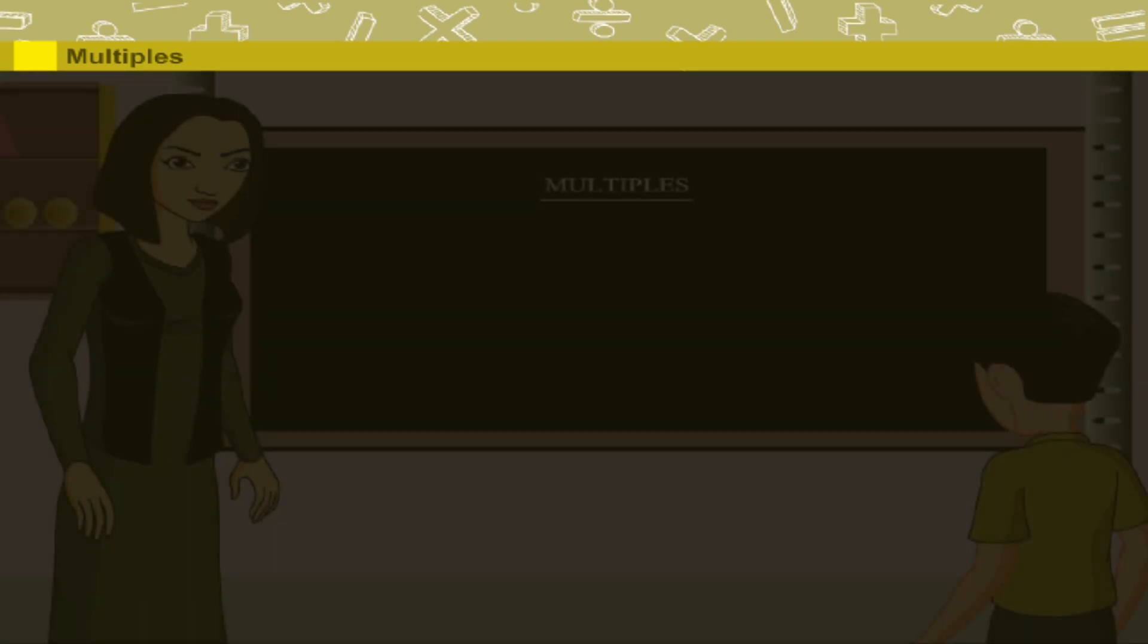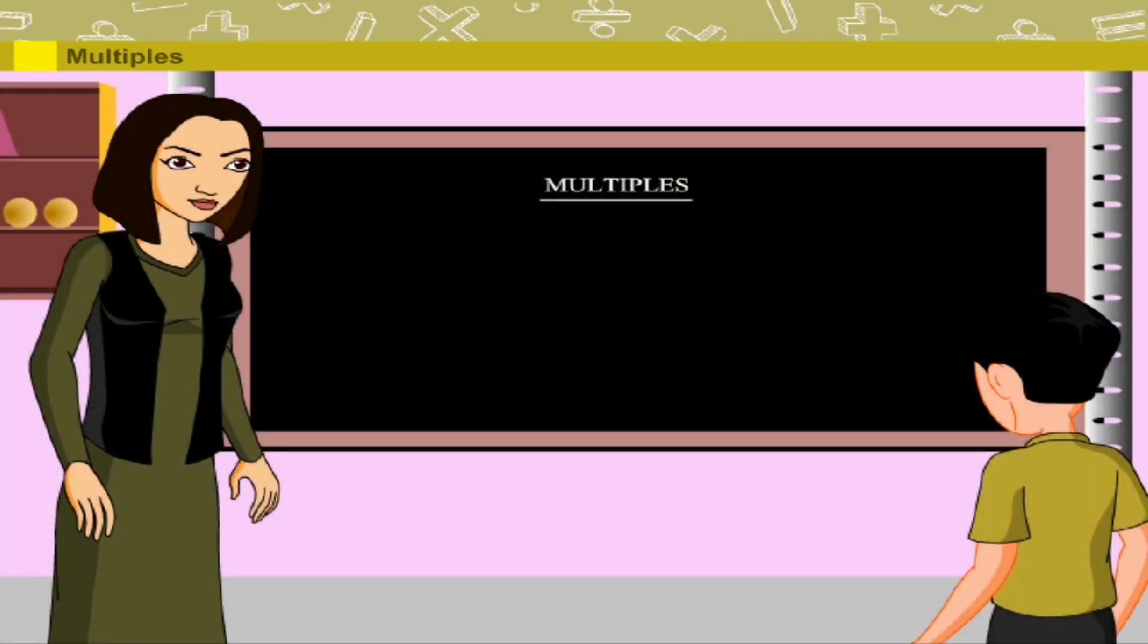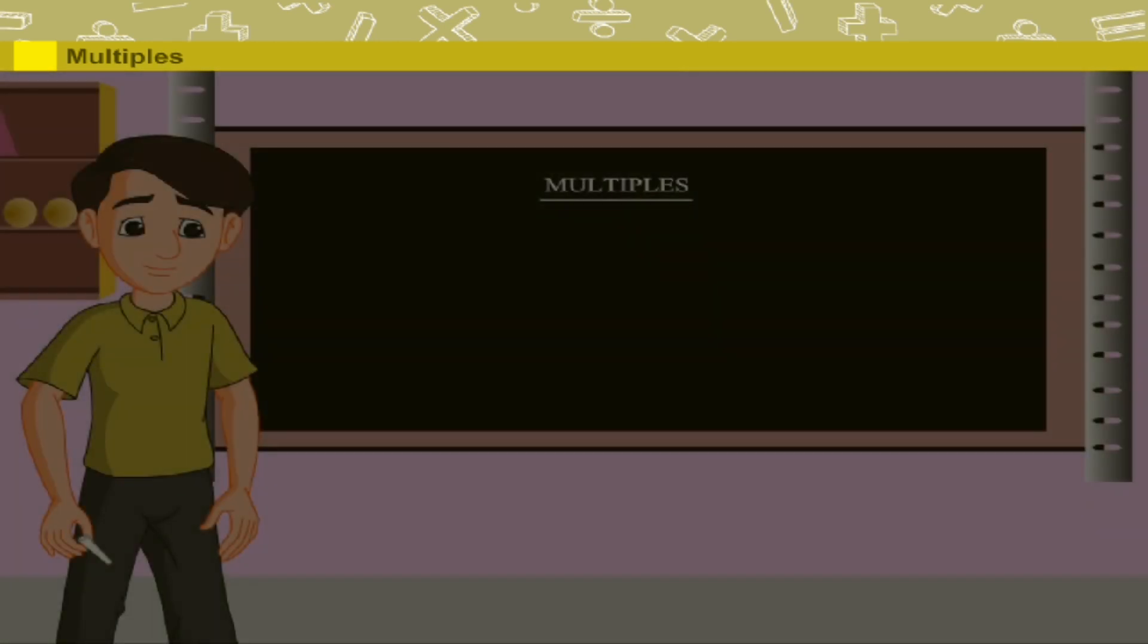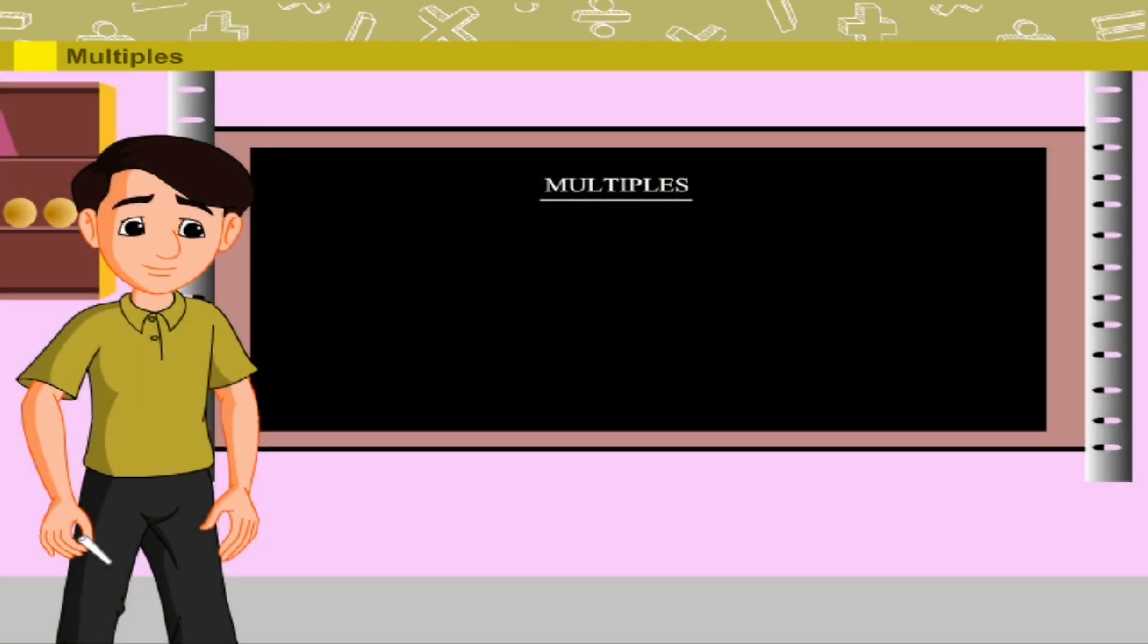Multiples. Teacher Mala asks Ramu to write the first five multiples of four. Ramu knows that if a number is multiplied by another number, the product obtained is called a multiple of the first number.